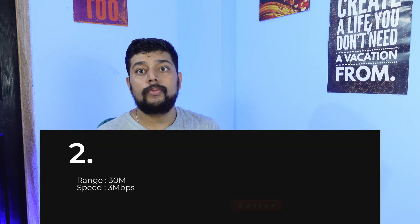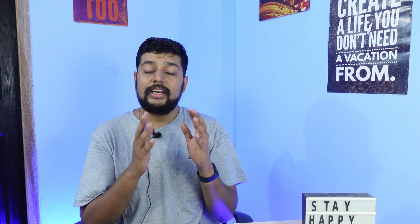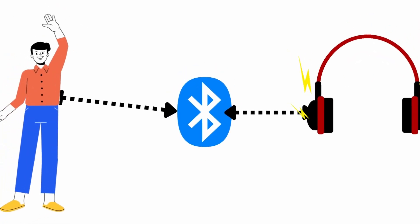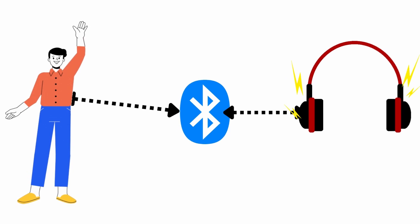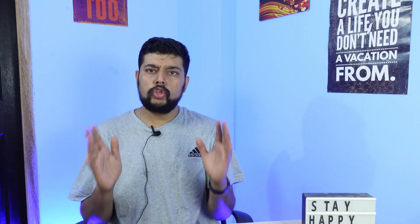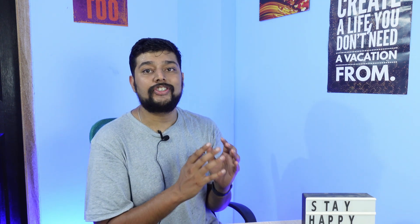Then came Bluetooth 2.0, where the range became 30 meters. With that increased range, a lot of things started changing and people began using Bluetooth for mainstream applications like headphones. The transfer speeds also increased up to 3 Mbps, so it could be used more or less for an audio experience, but it was still not perfect and remained very energy-inefficient.